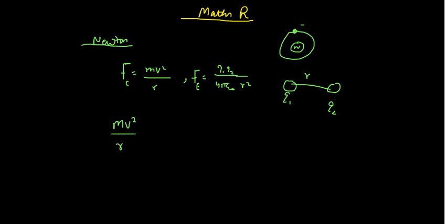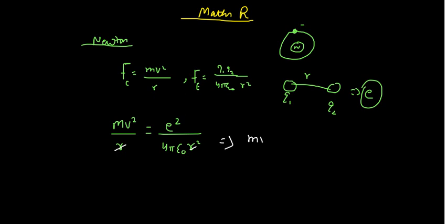When we solve these things, mv² divided by R is equal to — now in place of q1 and q2, we simply put the electron charge E. So we have E² divided by 4πε₀R². Now R gets cancelled out with one R, and we finally have mv² is equal to E² by 4πε₀R.